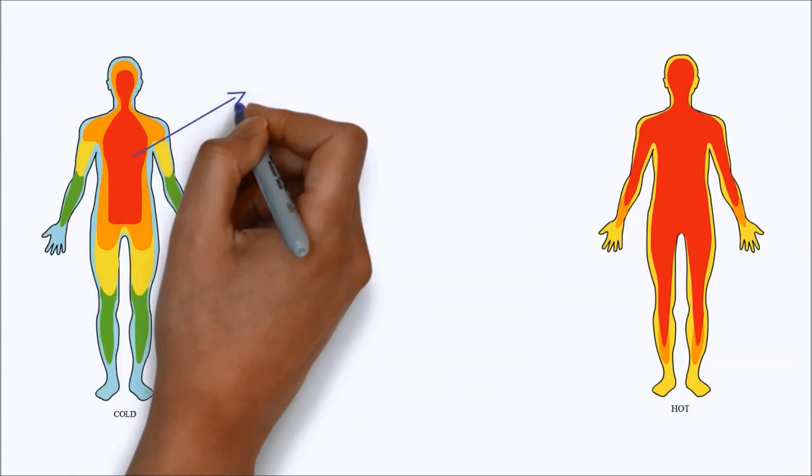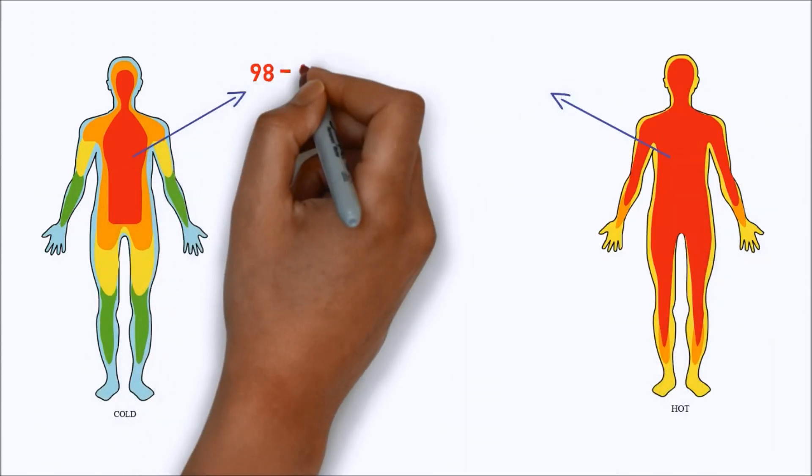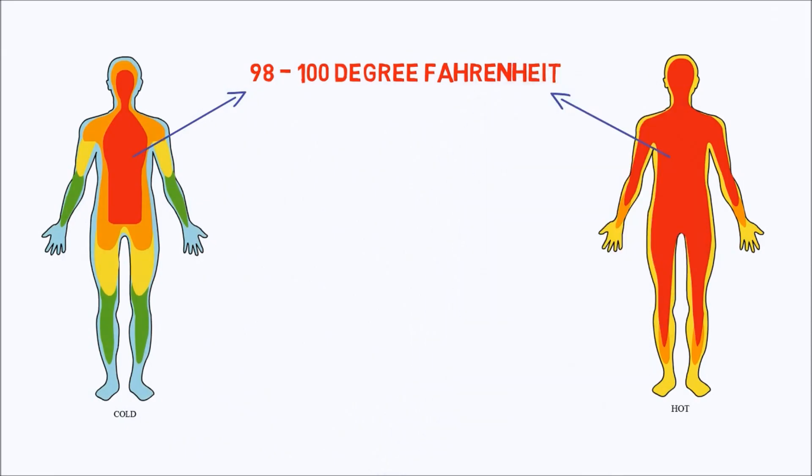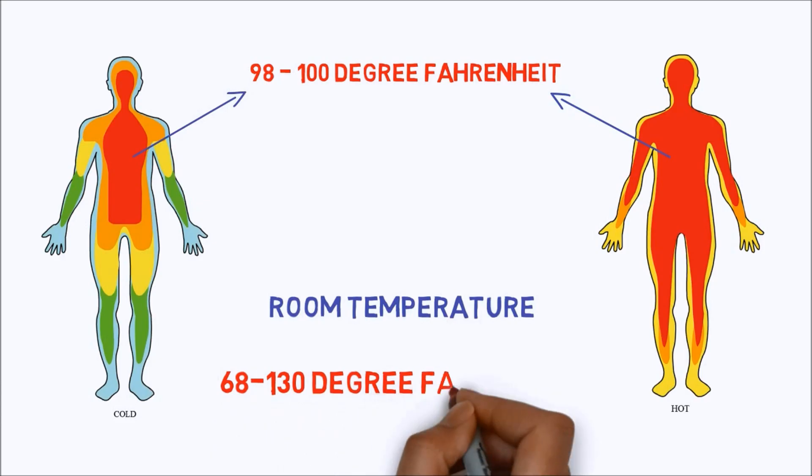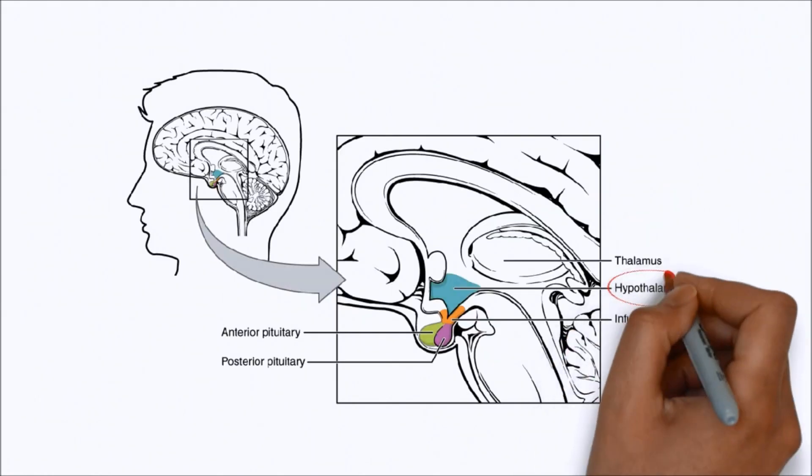Core temperature remains somewhere between 88 degrees Fahrenheit and 100 degrees Fahrenheit when the ambient temperature is between approximately 68 degrees Fahrenheit and 130 degrees Fahrenheit. According to American physiologist Arthur Guyton, the hypothalamus is the processing center in the brain that controls body temperature.